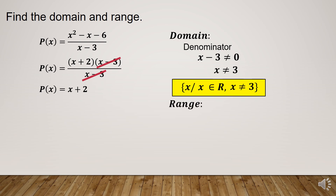For the range, since the simplified function is p(x) = x + 2, we substitute the restriction of x, which is 3. So y must not be equal to 3 + 2. Therefore, y must not be equal to 5. The range is the set of y such that y is an element of the real numbers, but y must not be equal to 5.